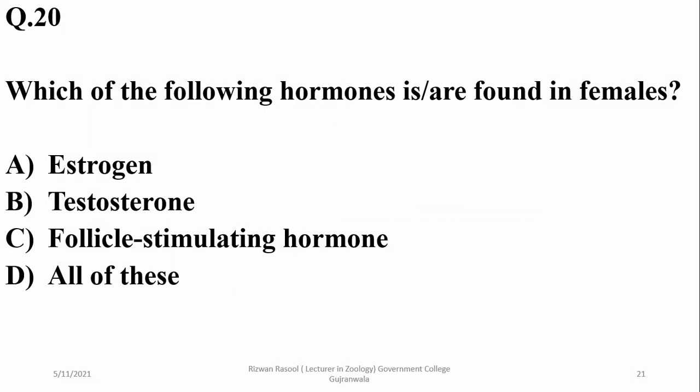Parathyroid hormone can be found in females, including testosterone, which is secreted by the adrenal cortex in females. So the answer is D.